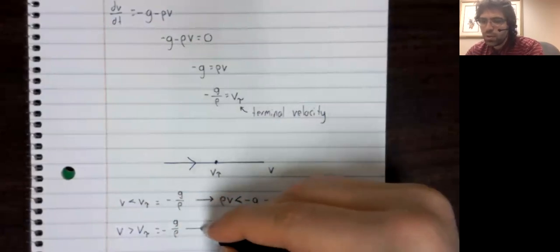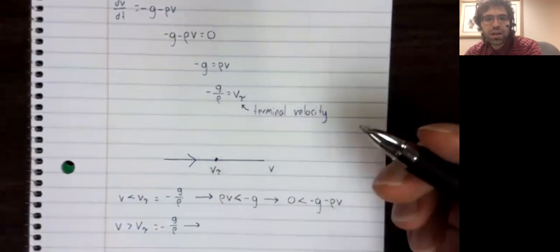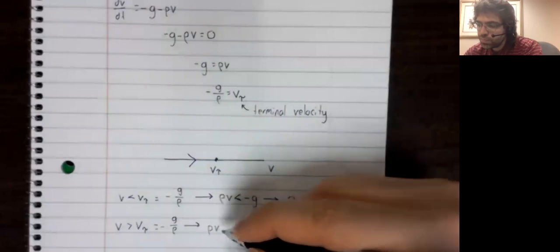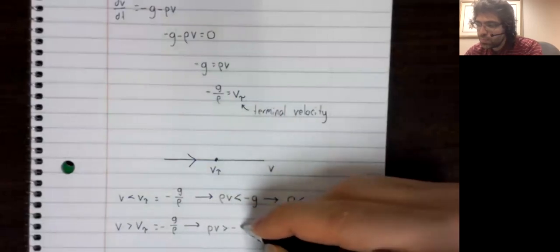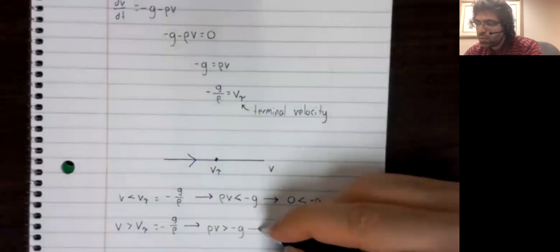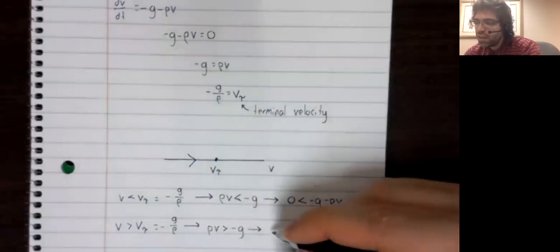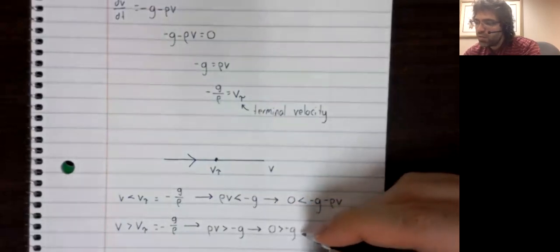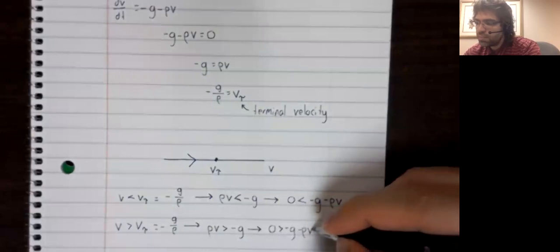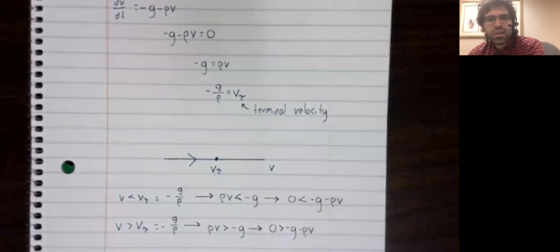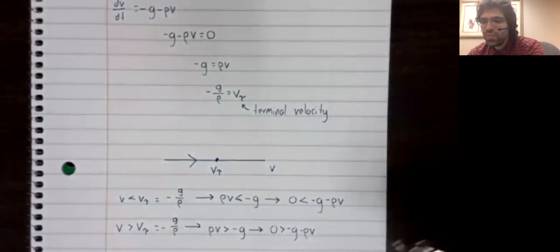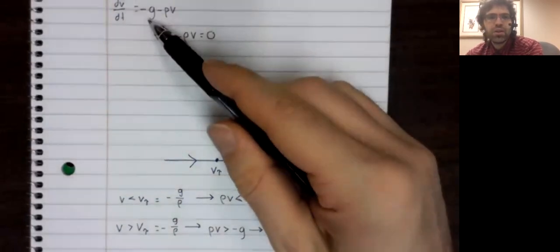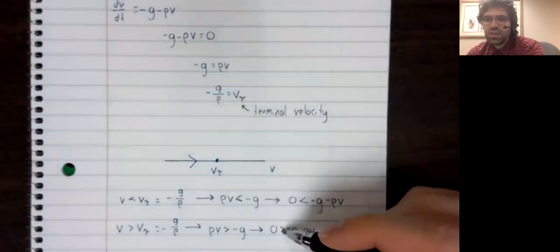Once again, we'll multiply both sides of this inequality by rho. Once again, we'll subtract rho V from both sides of this inequality. And we this time find that negative G minus rho V, the derivative is negative.